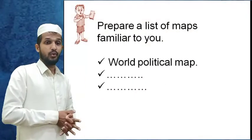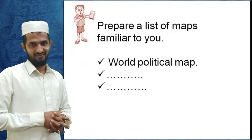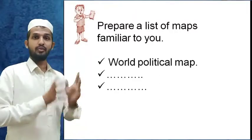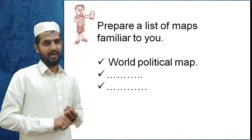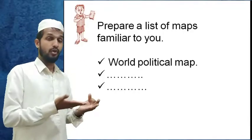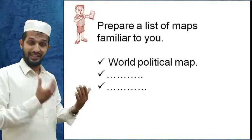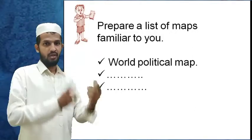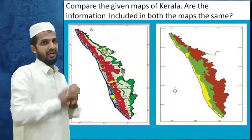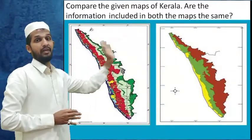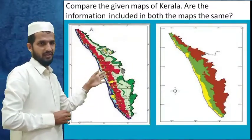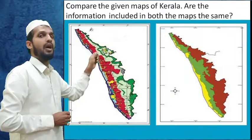Another task for you: prepare a list of maps familiar to you. First, prepare a world political map. Next, you can prepare an Indian map. And another one you can make is our own state Kerala map — you can also draw it. Then we can see two pictures of Kerala's map and compare them — they have some differences in colors and lines.